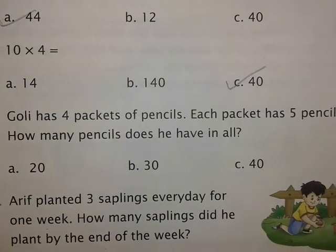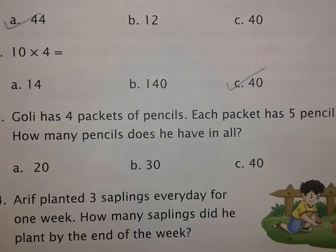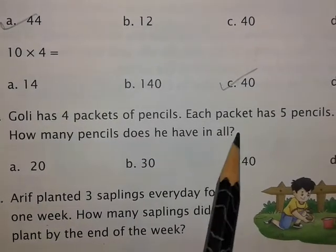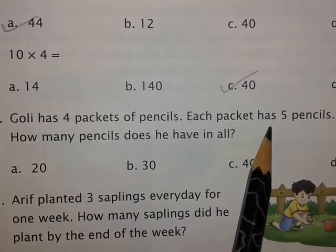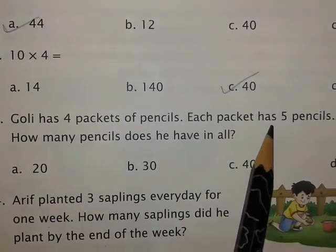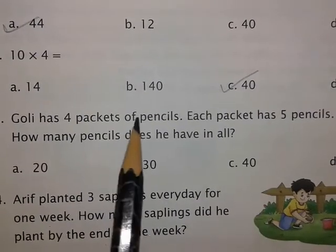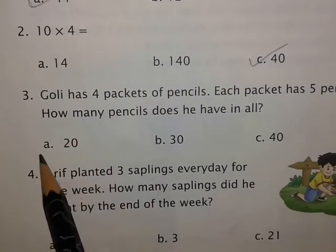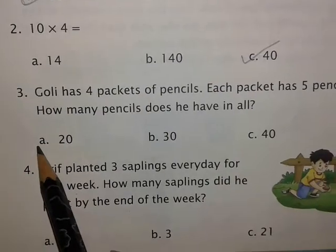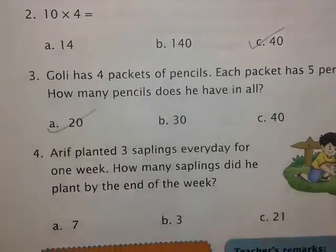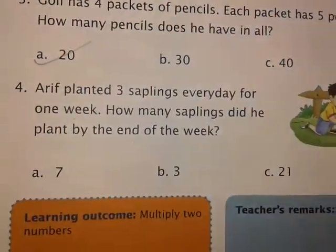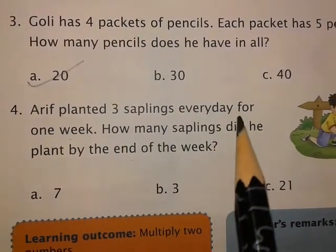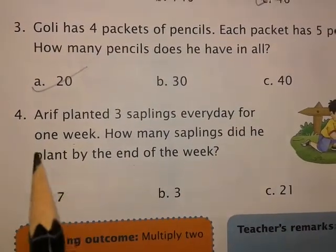Goalie has four packets of pencil and each packet has five pencils. How many pencils does he have in all? The number of packets is four and number of pencils in each packet is five. Four into five is twenty, so we give a tick mark on option A.